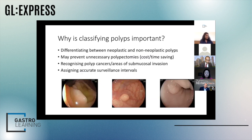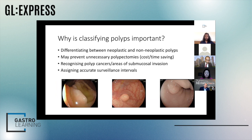Why is classifying polyps important? It's really important because not all polyps have the same neoplastic potential. There are benign hyperplastic polyps in the rectosigmoid which we don't need to resect as they don't harbor any malignant potential. If we can use the techniques to differentiate these polyps, we can save time, save the cost of histopathology, and save the patient unnecessary polypectomies.